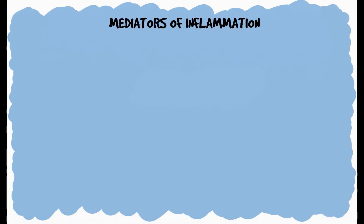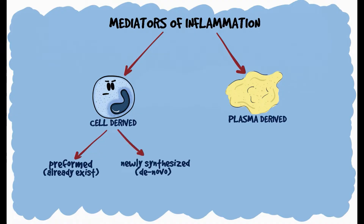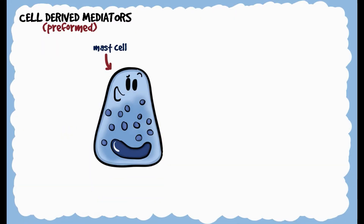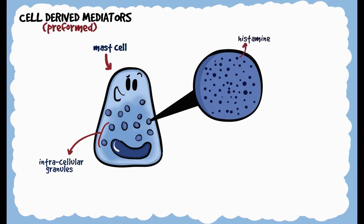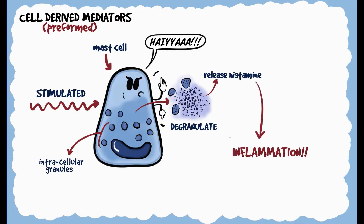Mediators of inflammation are either cell derived or derived from plasma proteins. When derived from cells, they could either be preformed — meaning they could already exist in the cell — or could be newly synthesized. Cells like mast cells, for example, have intracellular granules packed with chemical mediators called histamine. Mast cells, when stimulated, degranulate and release these already preformed chemical mediators eliciting inflammation.